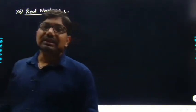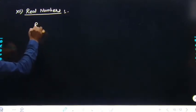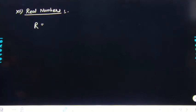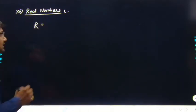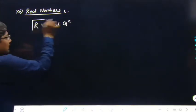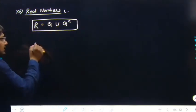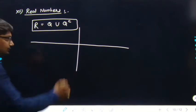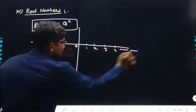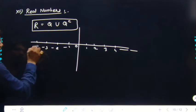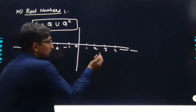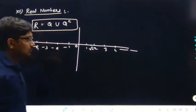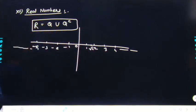Real numbers: basically real numbers को R से represent करते हैं, जो rational और irrational numbers का combination है — R = Q ∪ Q'। Number line पर: 0, 1, 2, 3, 4 right side और -1, -2, -3, -4 left side। इनके बीच में कहीं भी irrational numbers की values आ सकती हैं, जैसे √2 ≈ 1.41। Rational plus irrational — which is nothing but real numbers।